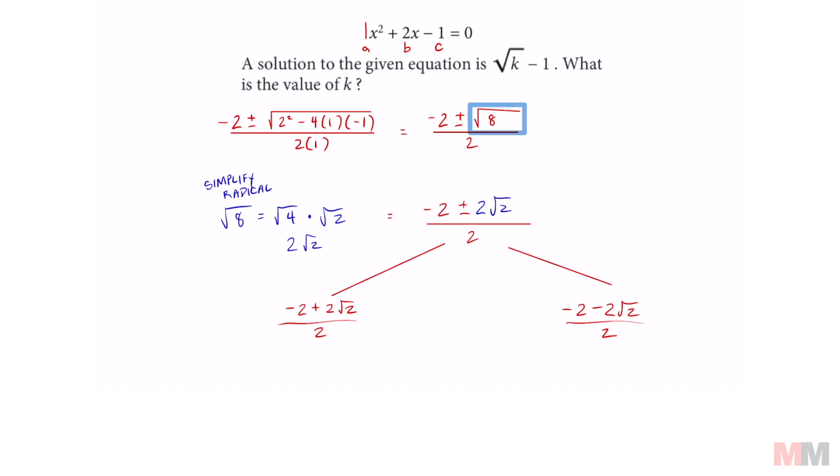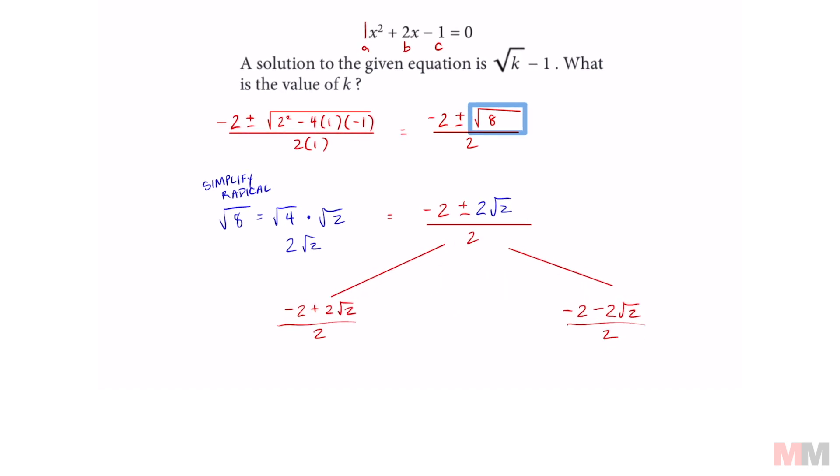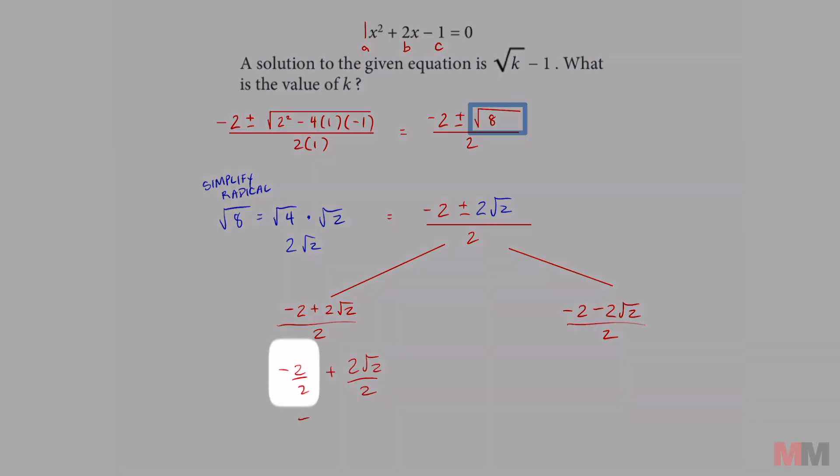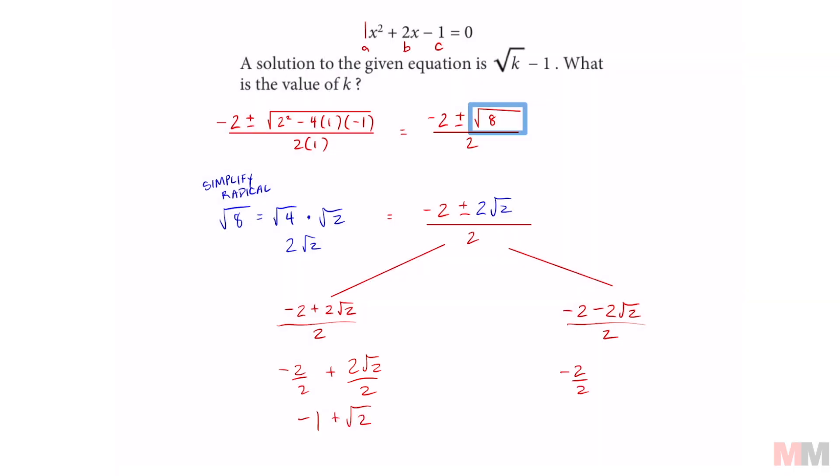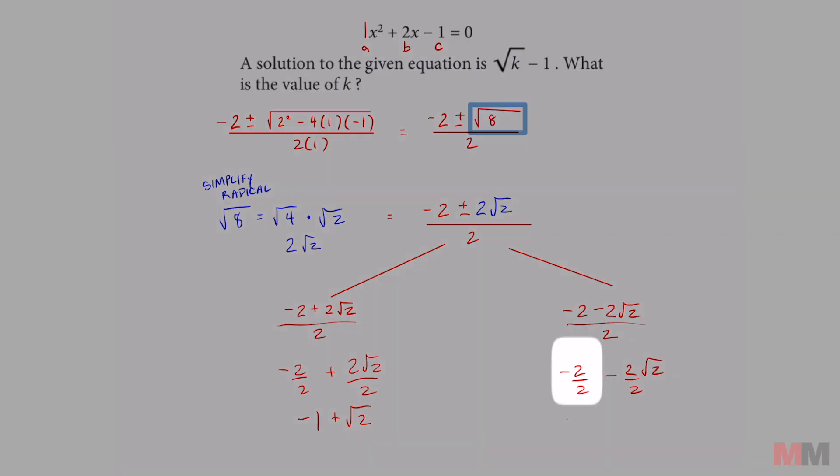I'm almost done. Stick with me, and you'll see how creative this was. The first answer, we can split up this division right here. This right here turns to negative 1, and the 2s cancel out, so we're left with just root 2. Same thing on the right side. Split up that division, which turns into negative 1 minus the square root of 2.